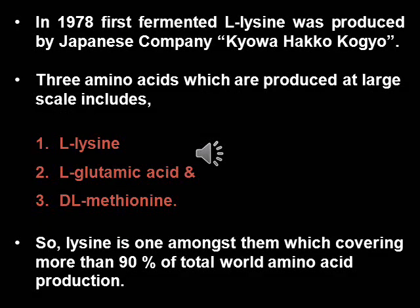The first fermented L-lysine was produced by the Japanese company Kyowa Hakko Kogyo in 1978. There are three amino acids which are produced at large scale: L-lysine, L-glutamic acid, and DL-methionine.